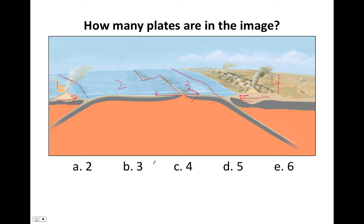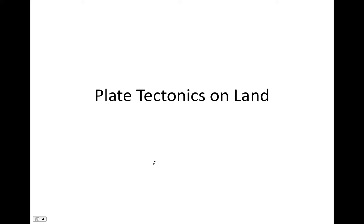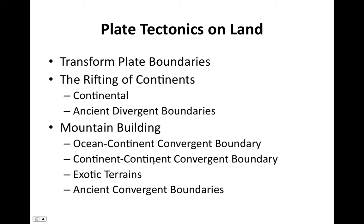Now we're going to look at plate tectonics on land — features associated with plate tectonics that occur on land. We're going to talk about transform plate boundaries, the rifting of continents, which is the break-up of continents, and mountain building. So we're going to start with transform plate boundaries. There are several fairly long transform plate boundaries on the planet, notably the San Andreas Fault or the Alpine Fault in New Zealand.